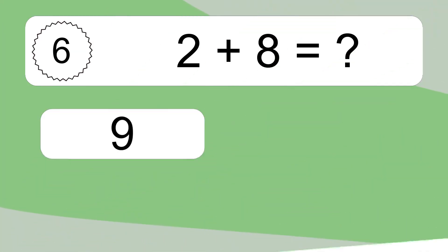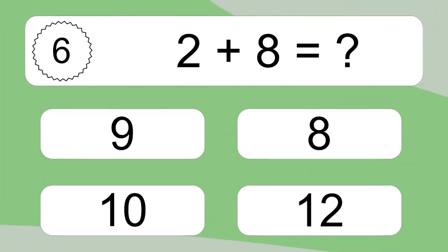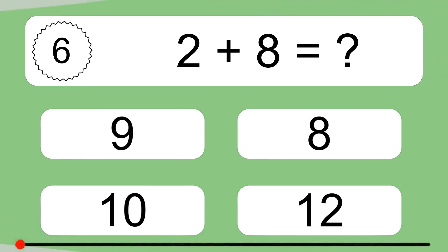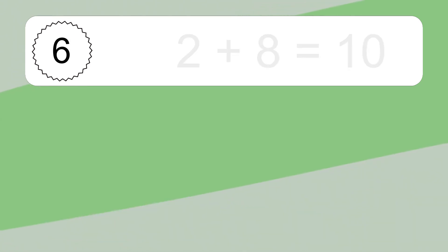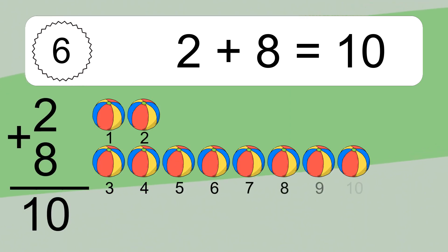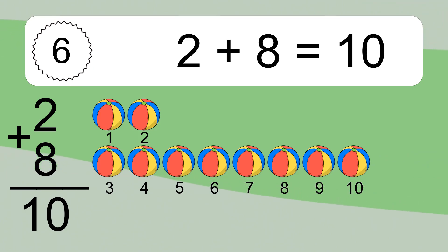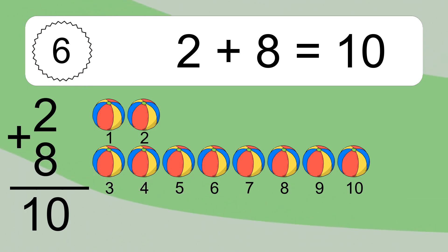2 plus 8 equals what? 2 plus 8 equals 10. Let's count it. 1, 2, 3, 4, 5, 6, 7, 8, 9, 10.